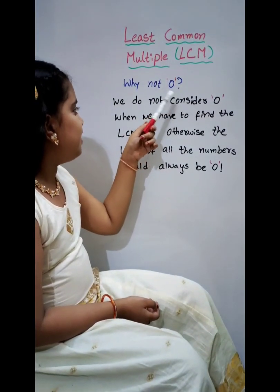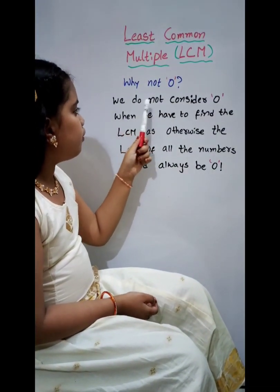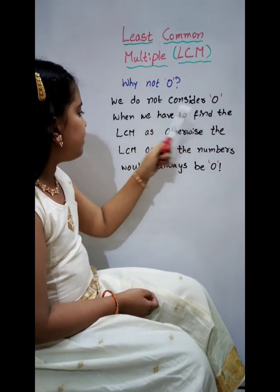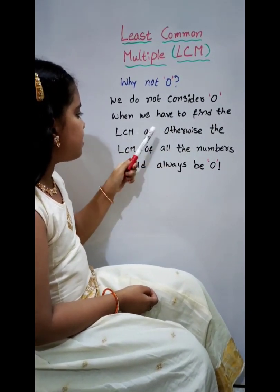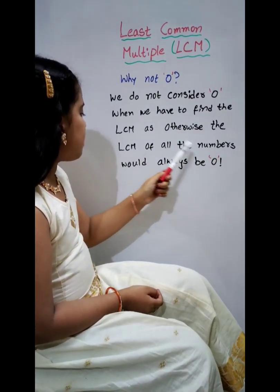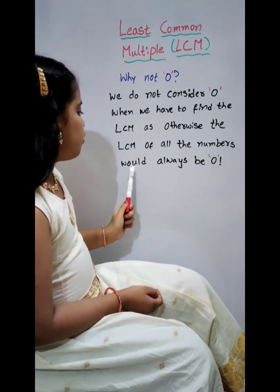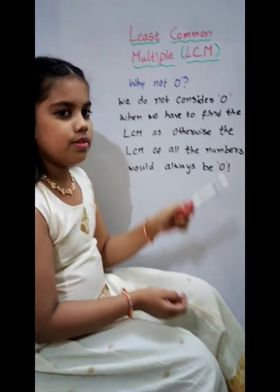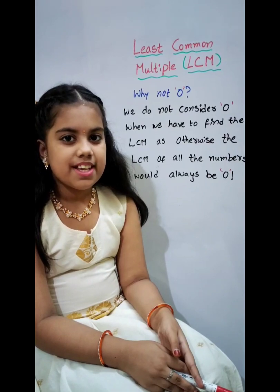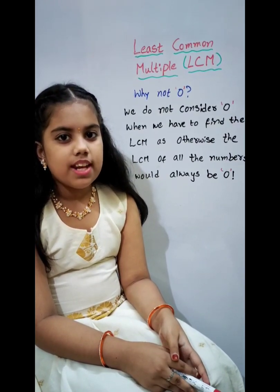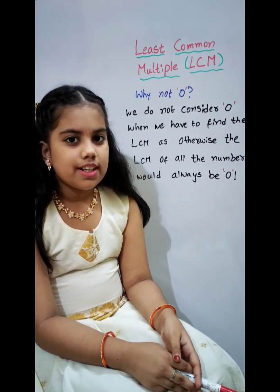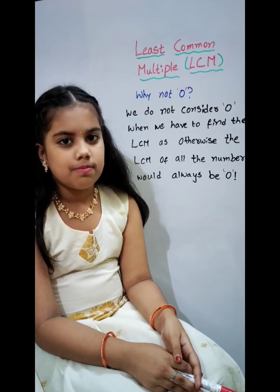Why not 0? We do not consider 0 when we have to find the LCM, as otherwise the LCM of all the numbers would always be 0. So we do not consider 0 as LCM.